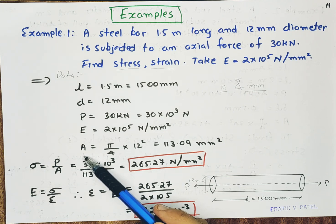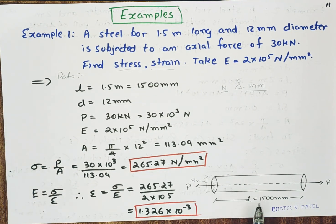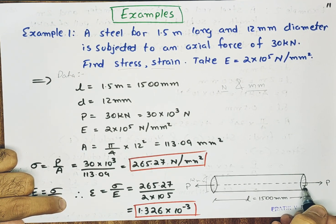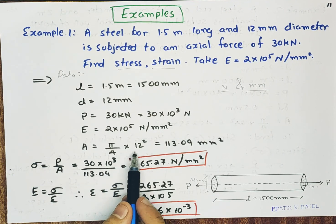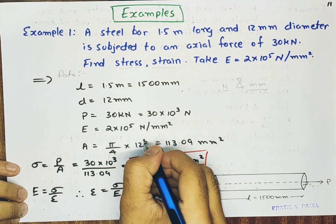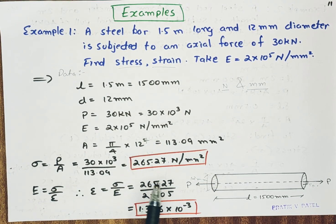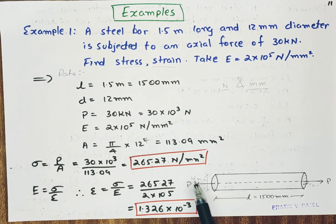Then after area. Area means cross sectional area. This area. The area which is perpendicular to the force. That is π by 4 D squared. π by 4 into 12 squared. So I got this cross sectional area of this rod. That is 113.09 mm square.